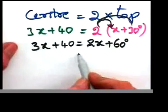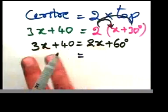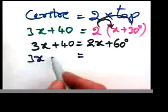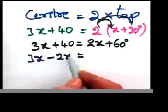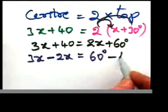Bring the x's to one side, so it's a 3x stays there, the 2x will be a minus 2x. You got your 60, and then take that 40 away, it's a minus 40.